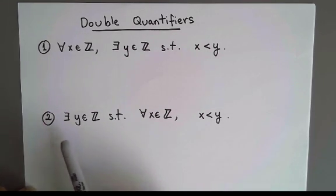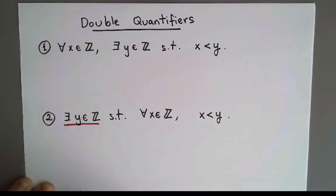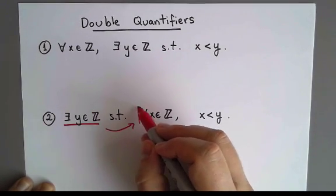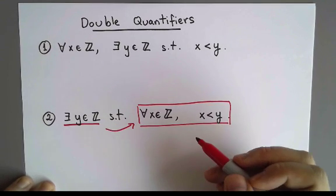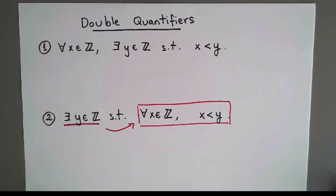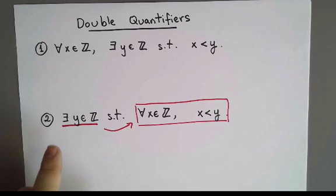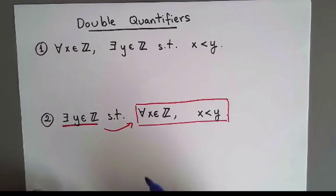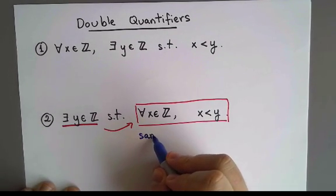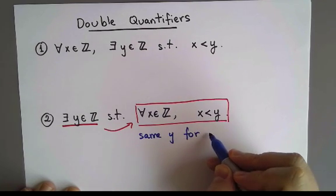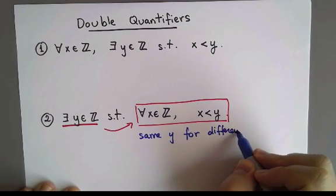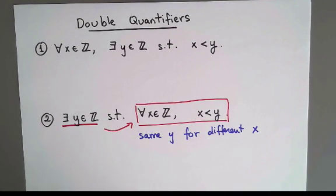I'm going to start with statement number 2, beginning at the start. This statement starts with 'there exists an integer y,' so we are saying there is an integer y for which all of this is true. I am saying that there is an integer y, and for this fixed one integer y, y is greater than x for every x. In other words, I am using the same y for different values of x — in fact, for all x's I have to use the same y, because I led with 'there exists a y.'